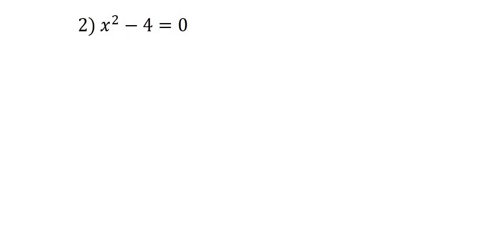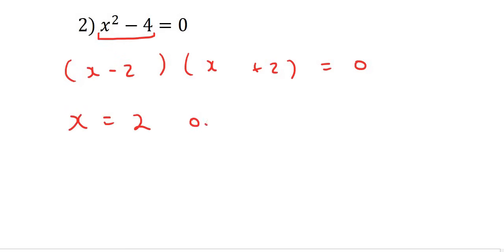Here's number 2. We already have the 0, so that's step 1 complete. Now we factorize. Remember, it's not always going to be a trinomial. This is actually a difference of squares. So we open up two brackets, where it will be x minus 2 and x plus 2. Remember, that's how difference of squares work. And so we're going to end up with x is equal to 2, or x is equal to negative 2.